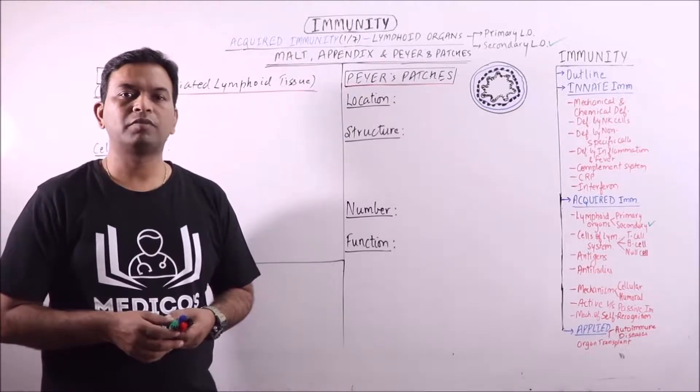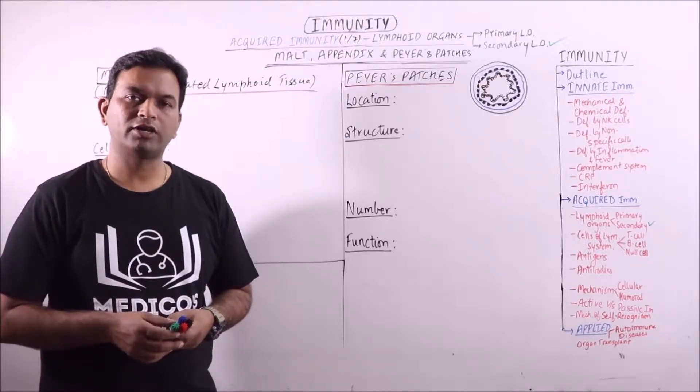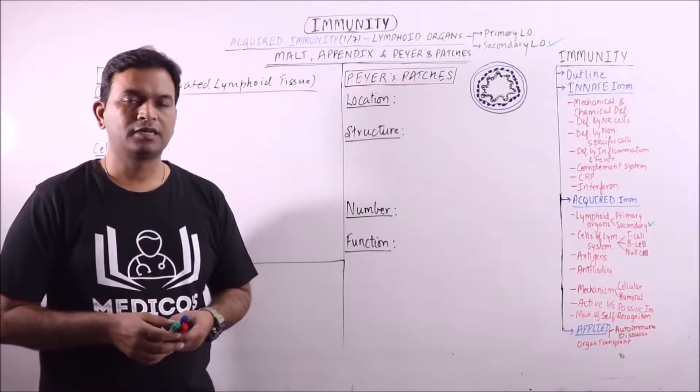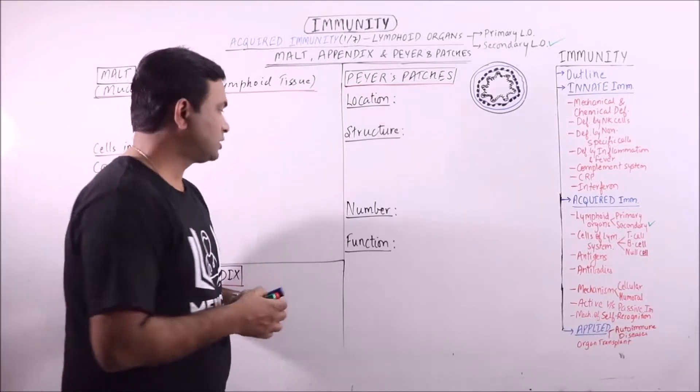In this video we are going to discuss about the MALT, that is mucosa-associated lymphoid tissue, vermiform appendix, and the Peyer's patches. First of all, MALT.